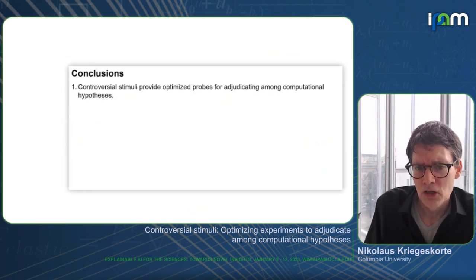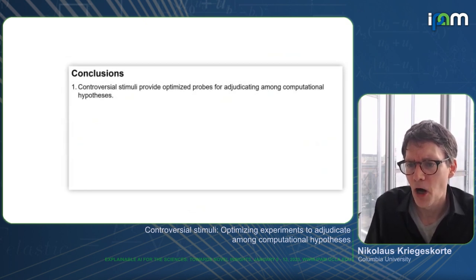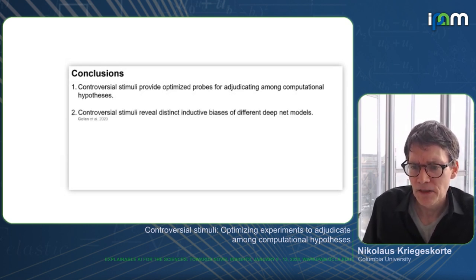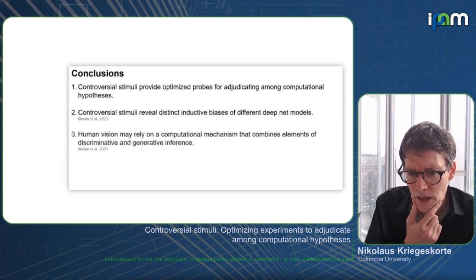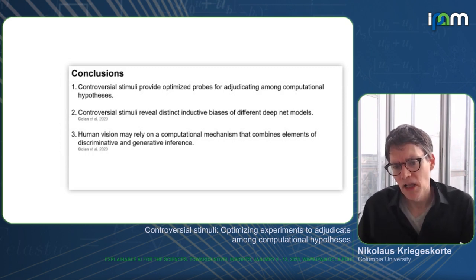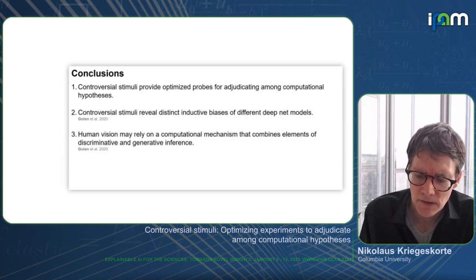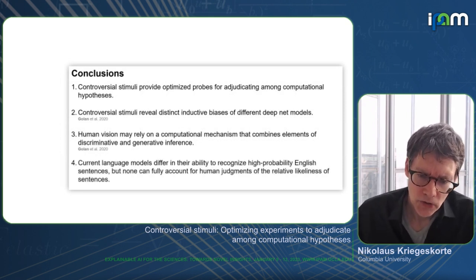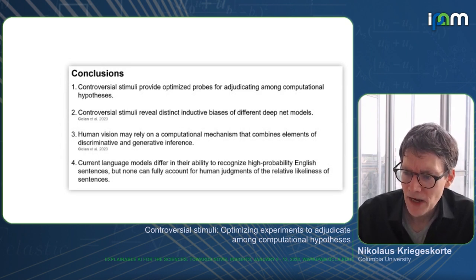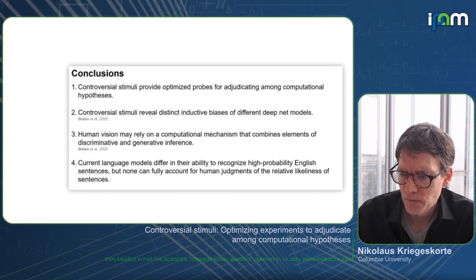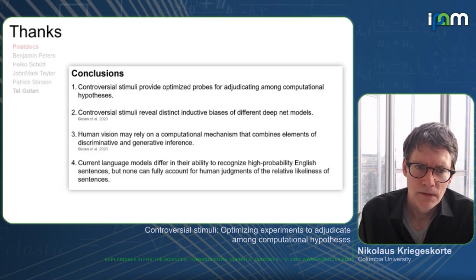In conclusion, controversial stimuli provide optimized probes for adjudicating among computational hypotheses. They reveal distinct inductive biases of different deep net models. Human vision may rely on a computational mechanism combining elements of discriminative and generative inference. And current language models differ in their ability to recognize high probability English sentences, but none can fully account for human judgments of the relative likeliness of sentences. Thank you very much.